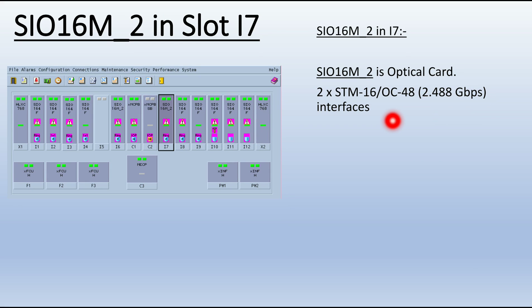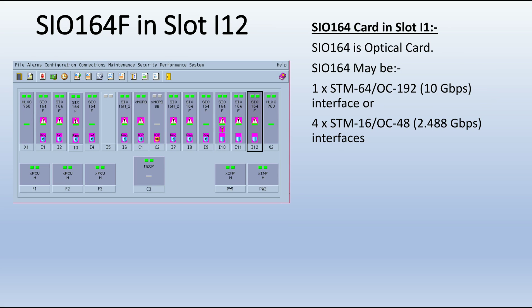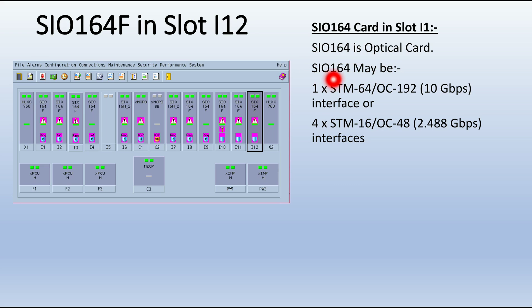The same SIO 16M2 card is also in slot I7. SIO 164F in slot I12 is an optical card and this is a combination card. It may be a 1x STM-64 interface or a 4x STM-16 interface — so this slot can contain a card with one interface of 10 Gbps or four interfaces of 2.5 Gbps.